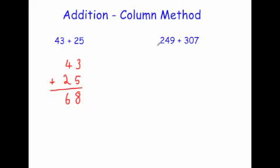Okay, let's have a look at another one: 249 plus 307. Again, let's line them up in columns, so 2 4 9 and 3 0 7. Okay, again put a line and put a plus sign.